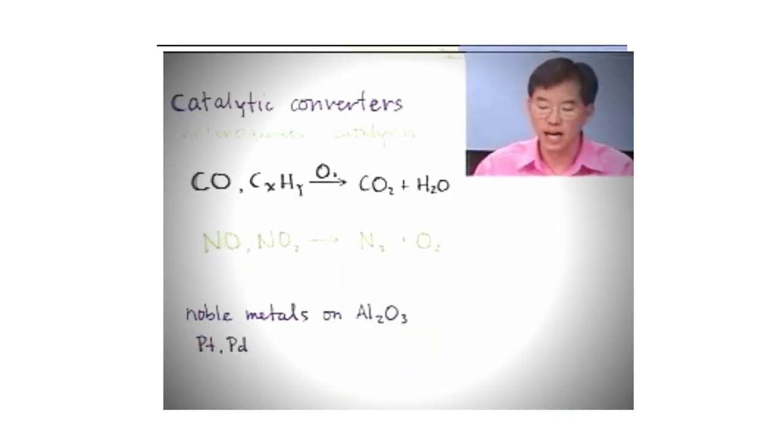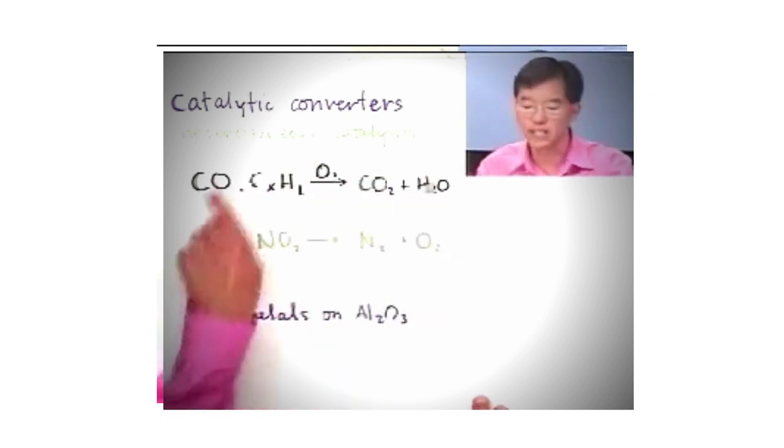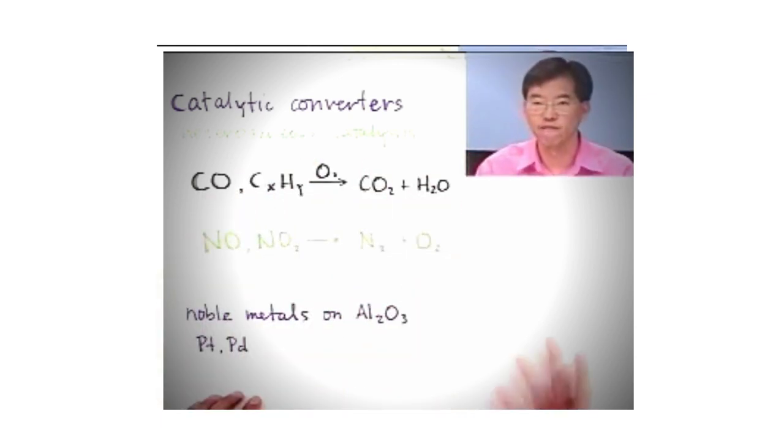And so what they do is they make these aluminous substrates on which they coat a thin layer of platinum or palladium or whatever other transition metals or metal oxides that they want, and then as the gases go by, they'll hit these catalysts and these reactions will occur and so your fuel is going to be cleaner.